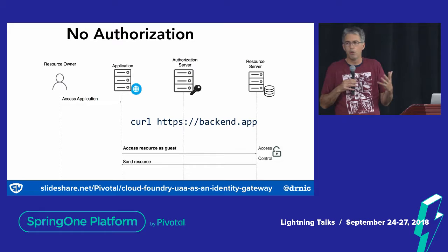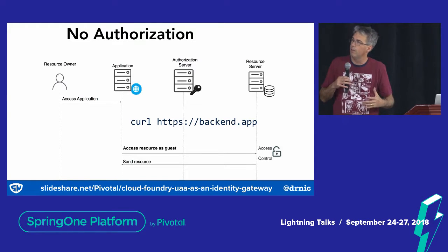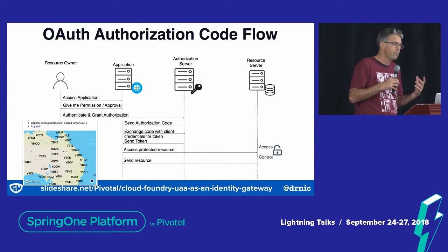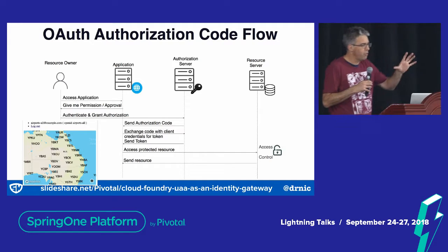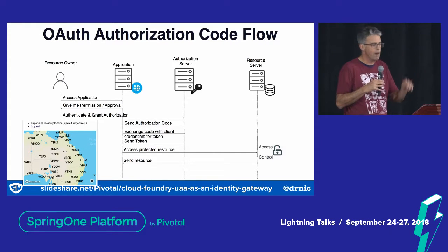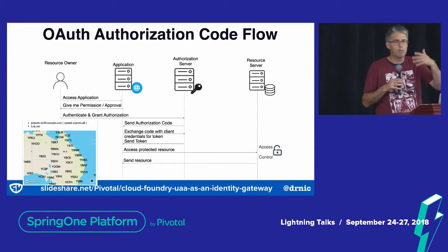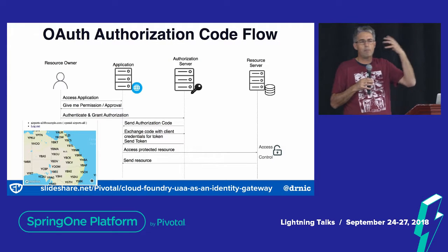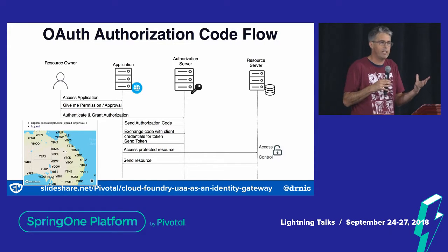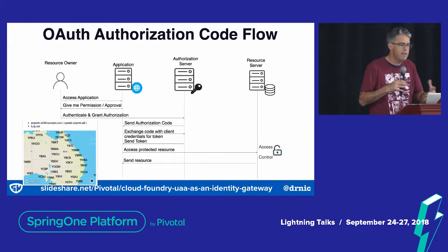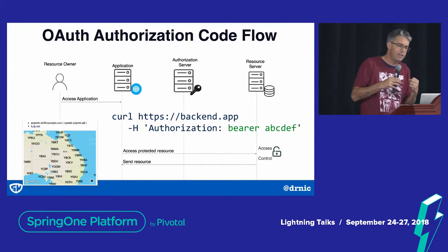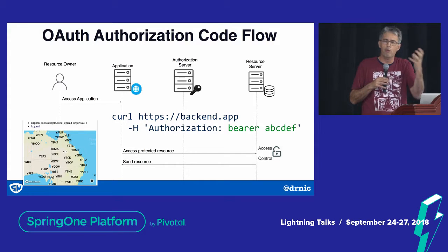When we move on to the authorization flow on the next slide, the password and authorization code flow — a two of four — you get that interaction we've all seen. There'll be a slide soon where you'll see what the UAA looks like. You log in, an authorization code is granted, and then we pass that through.